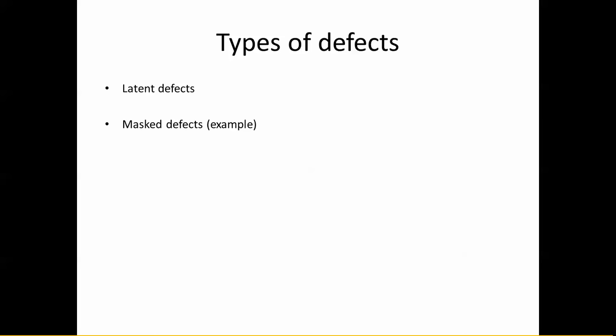The other type is called a mask defect. A mask defect is a defect that is actually hiding other defects in the system. The definition is a little tricky — a mask defect is a defect which is hiding other defects in the application. Let's take an example to understand this better.